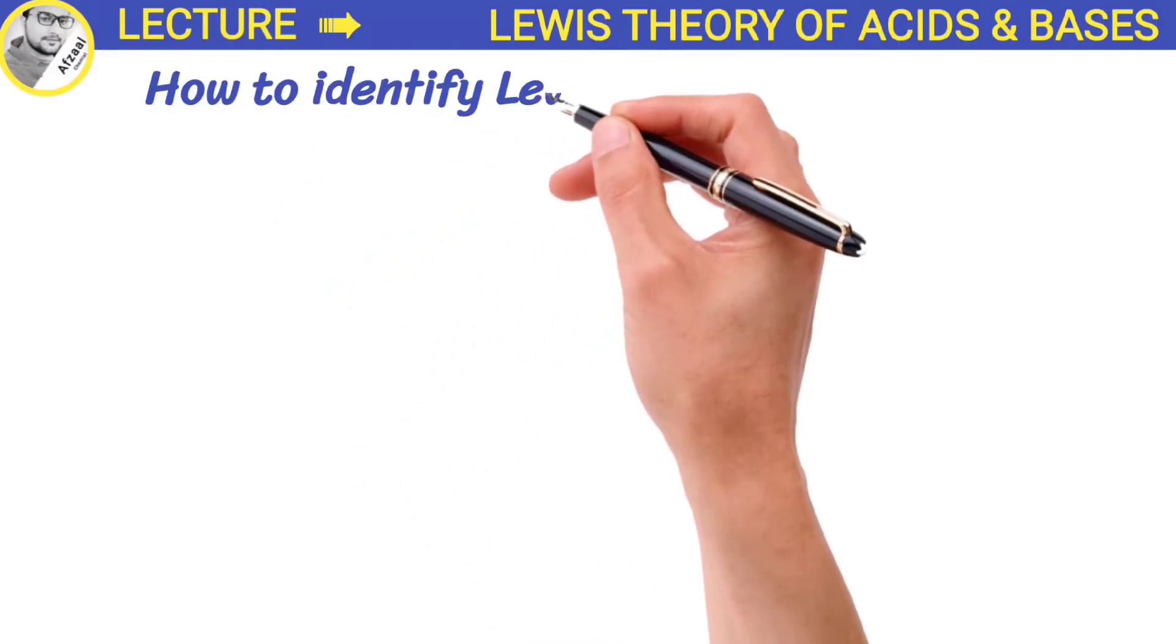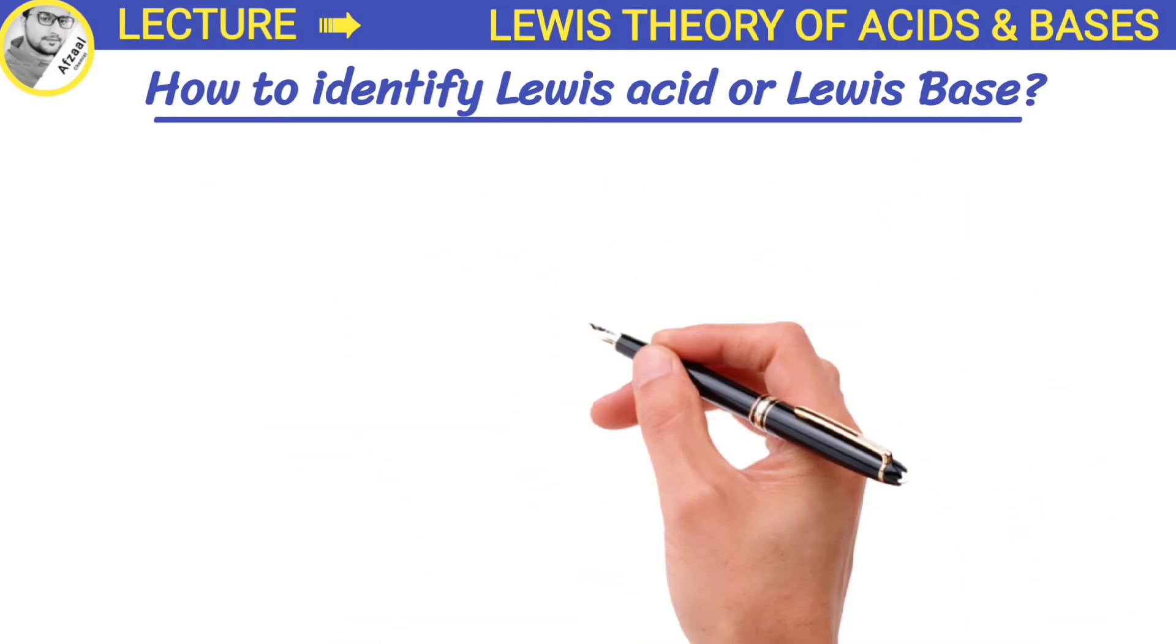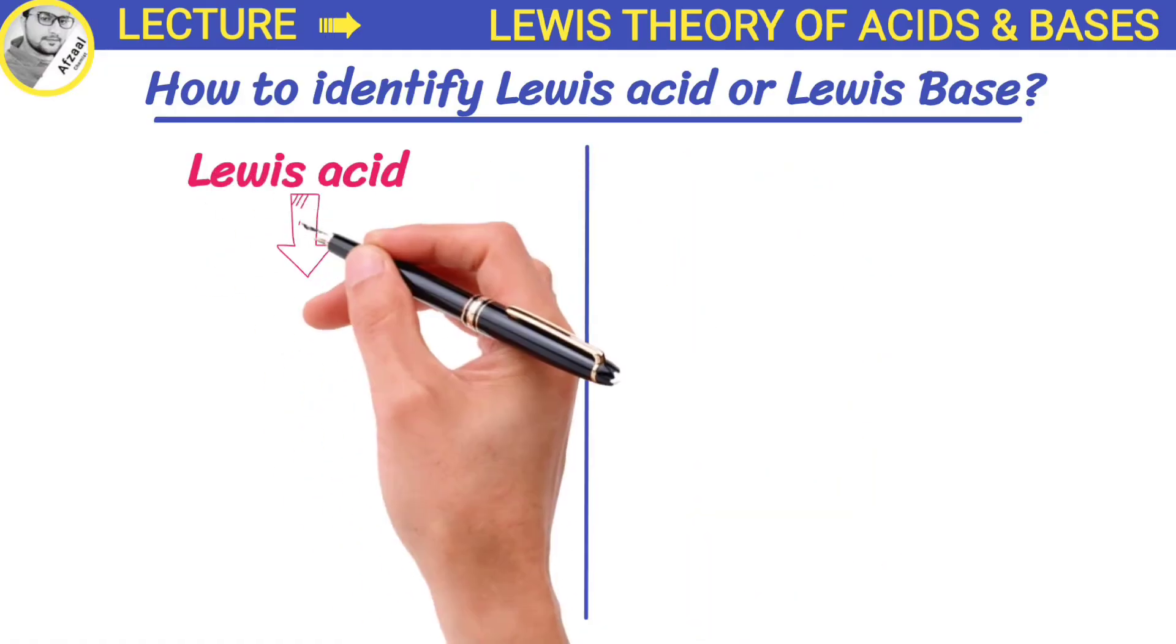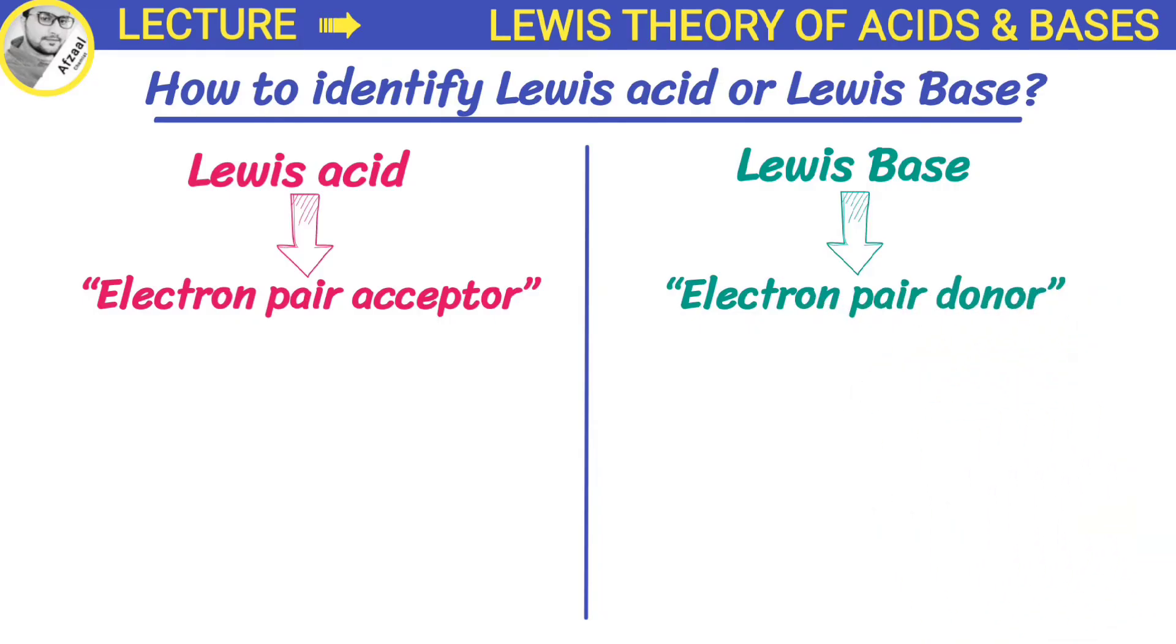Now let's talk about how to identify Lewis acids and Lewis bases. Lewis acids are electron pair acceptors, while bases are electron pair donors. According to Lewis concept, the two types of substances can act as Lewis acids.